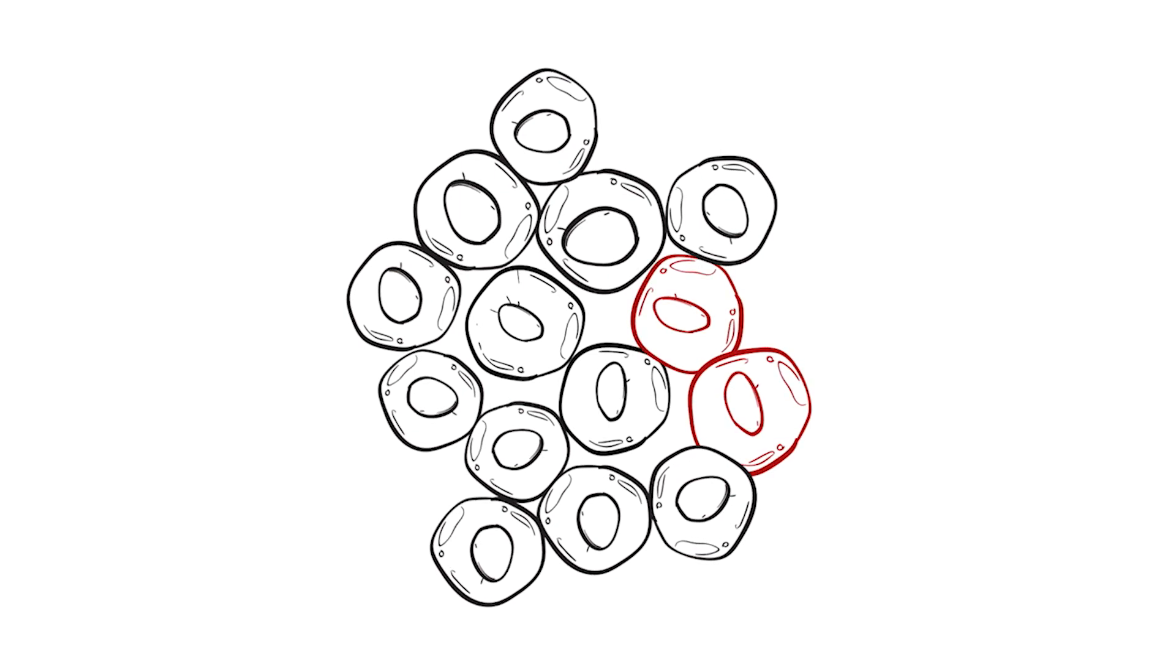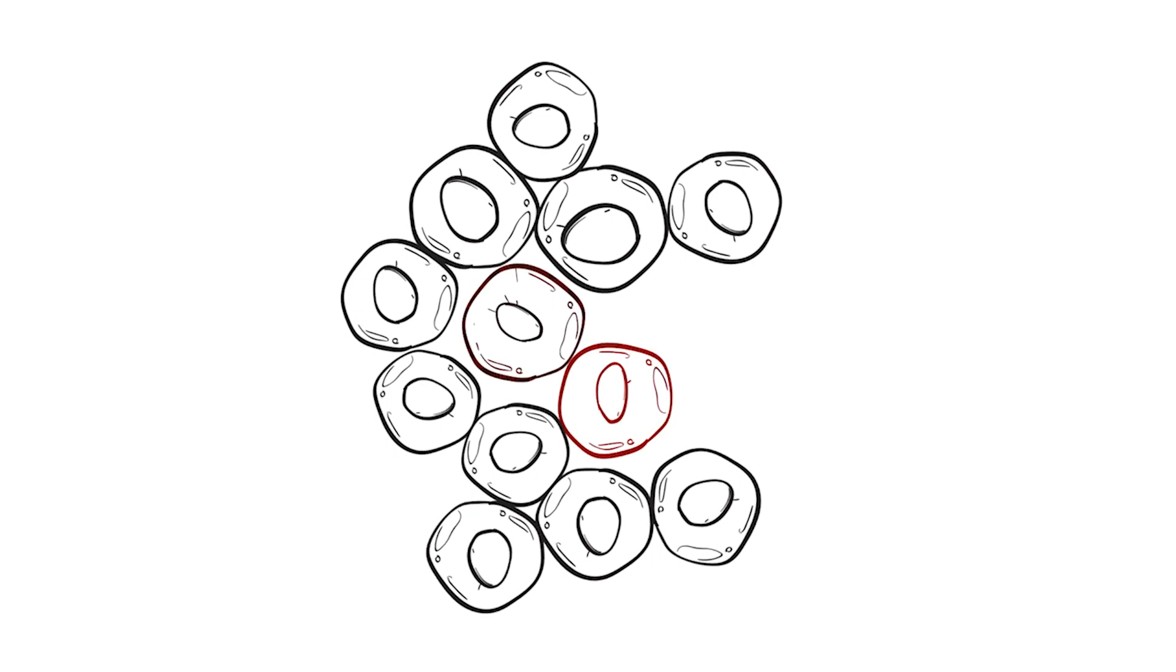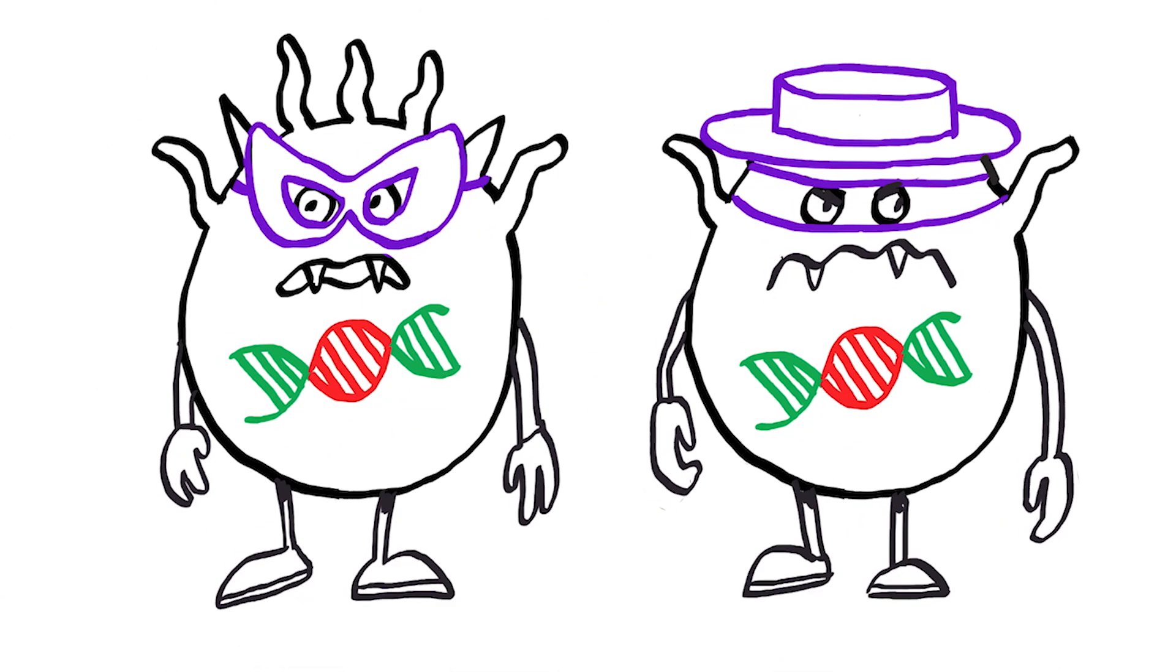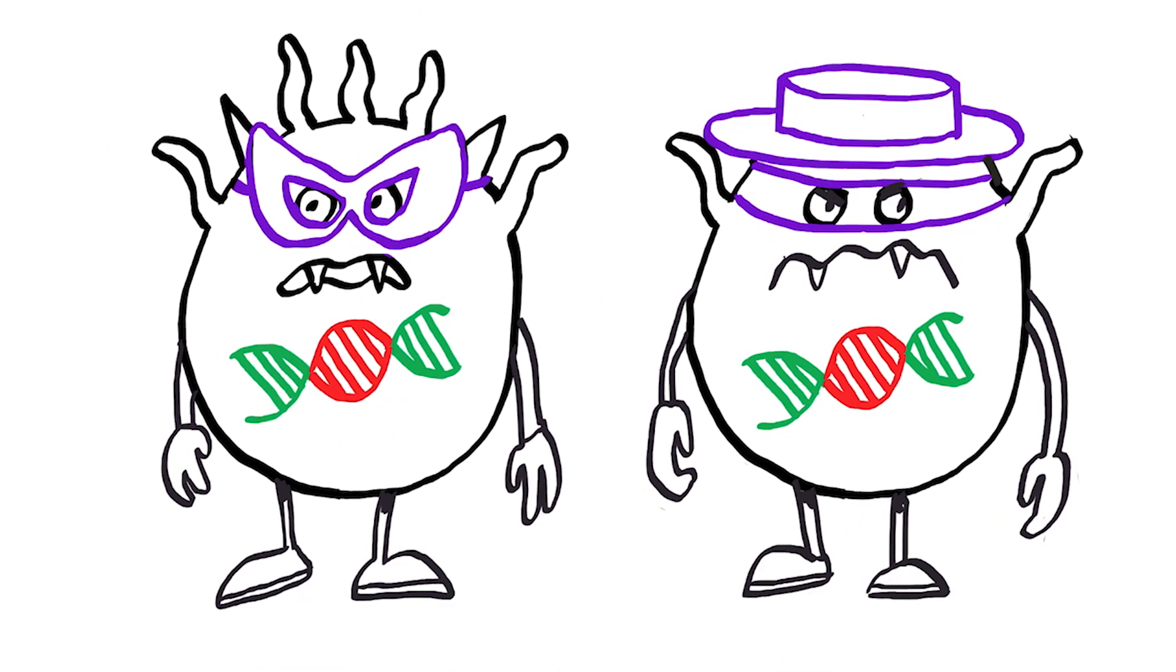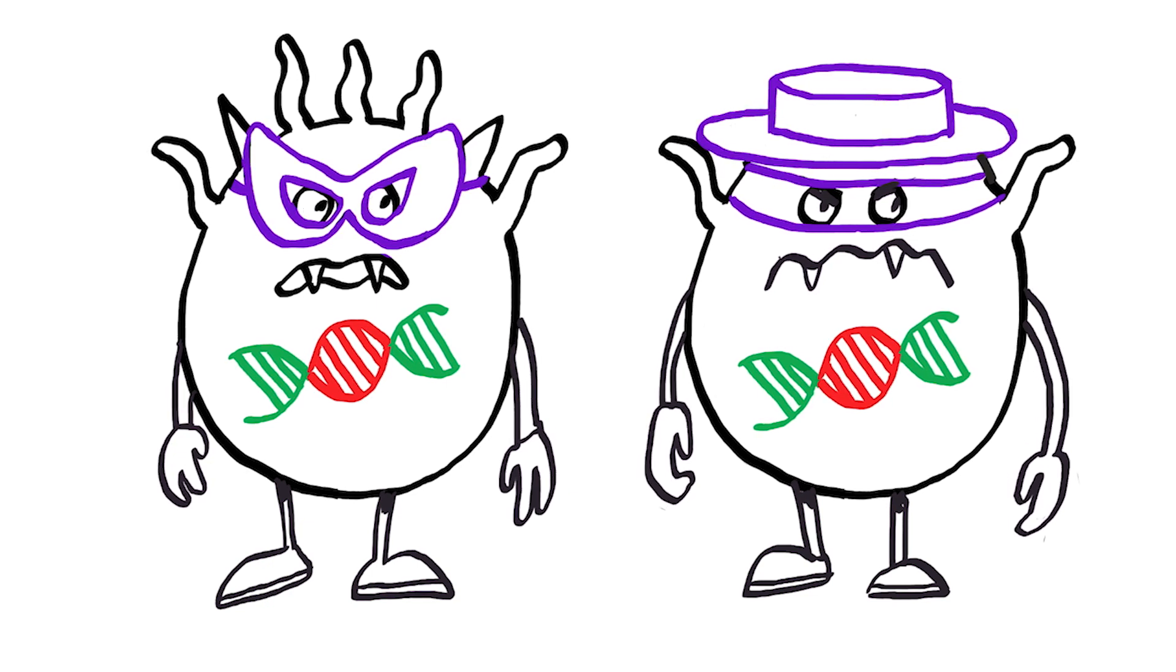Normally, your immune system automatically detects and destroys anything it finds that can harm your body, while leaving healthy cells alone. But melanoma cells disguise themselves as healthy ones, tricking your immune system into ignoring them.